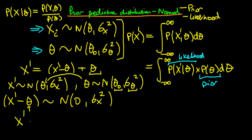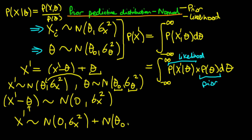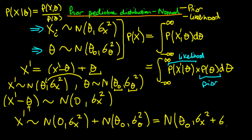Hence, we know that x primed is itself distributed as the sum of two normals. It's distributed as the sum of a normally distributed random variable with a variance of sigma_x squared and a mean of zero, plus a normal distribution with a mean of theta_zero and a variance of sigma squared theta. It is possible to prove that if we have two independently normally distributed random variables and we sum them together, then that sum itself is also normally distributed, with a mean equal to the sum of the two means — which in this case is theta_zero plus zero, which is just theta_zero — and with a variance equal to the sum of the two variances, which is sigma_x squared plus sigma squared theta.